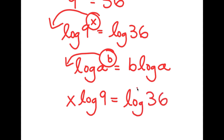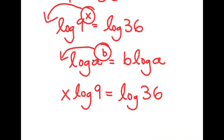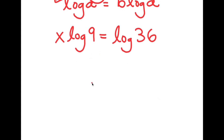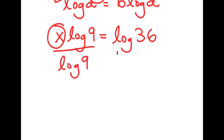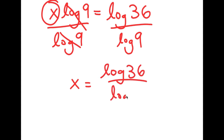This is why logarithms are so important in exponents — because for solving exponential equations, x is an exponent, and we need to bring x down to be a normal term, and the only way we can do that is by using logarithms. Now, to isolate x, I'm going to divide both sides by log 9. These two log 9s cancel out, and I get x is equal to log 36 over log 9.